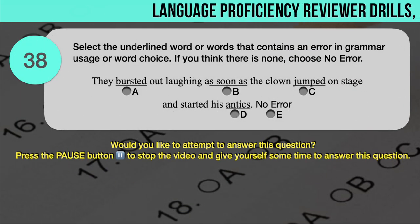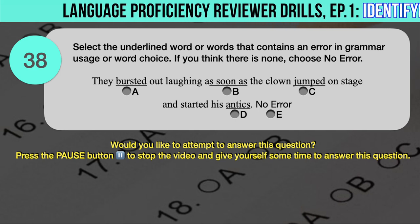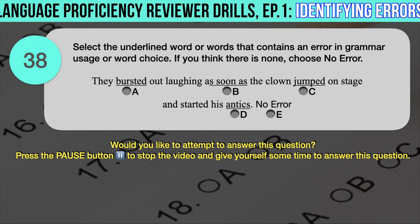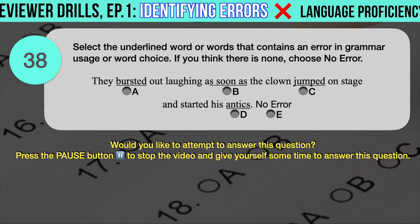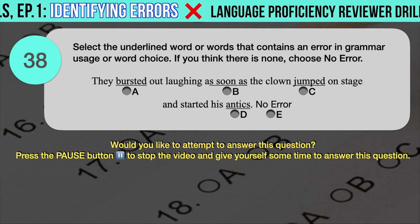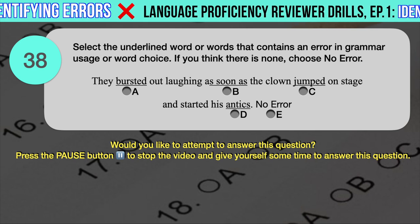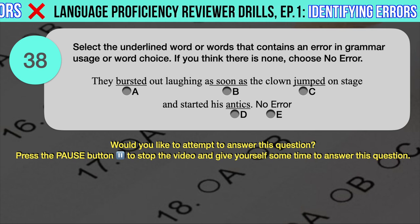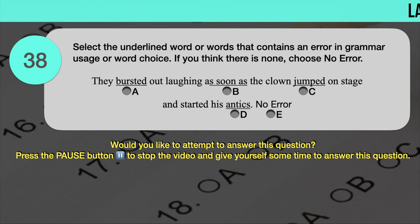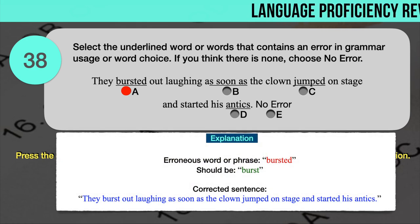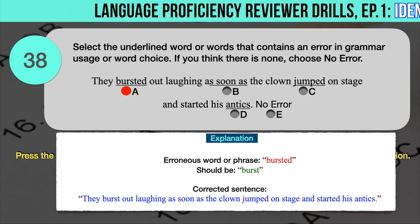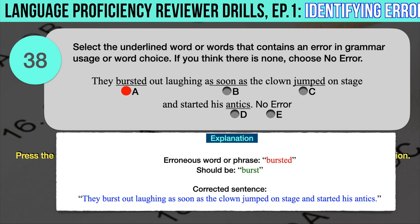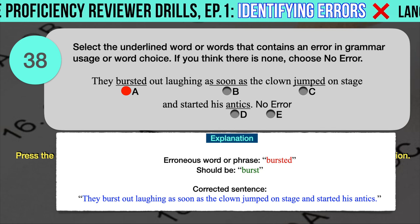Drill question number 38. 'They bursted out laughing as soon as the clown jumped on stage and started his antics.' The underlined words are: A. Bursted, B. As soon as, C. Jumped, D. Antics. The correct answer is A. 'Bursted' should have been 'burst.' The past tense and past participle of 'burst' is also 'burst.' Correct sentence: They burst out laughing as soon as the clown jumped on stage and started his antics.